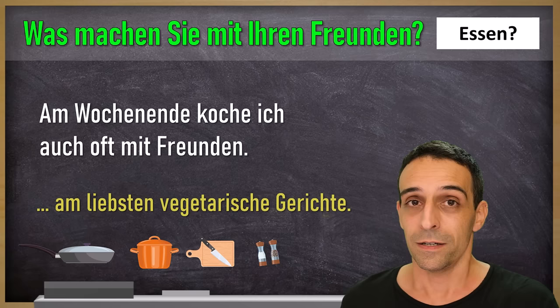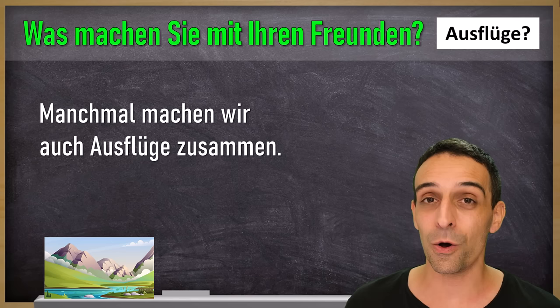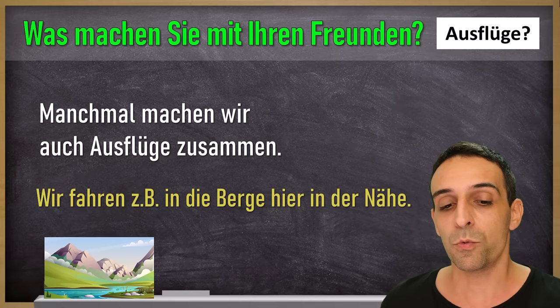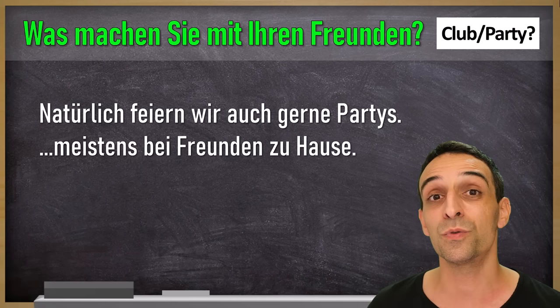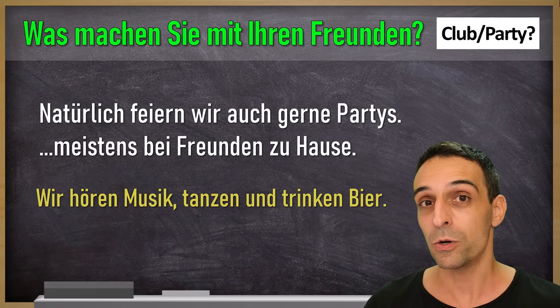For Ausflüge: Manchmal machen wir auch Ausflüge zusammen. Wir fahren zum Beispiel in die Berge, hier in der Nähe. For the last keyword, Club/Party, I use just one: Natürlich feiern wir auch gerne Partys, meistens bei Freunden zu Hause. Wir hören Musik, tanzen und trinken Bier. For the monologue, that's all you have to do.